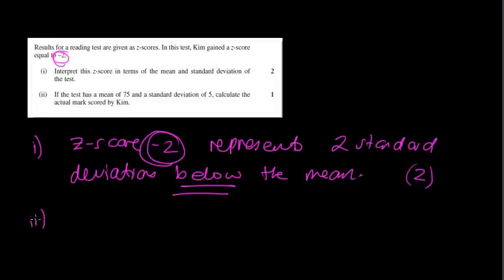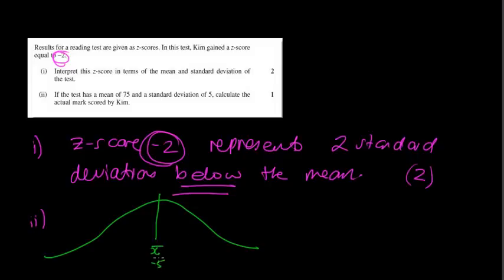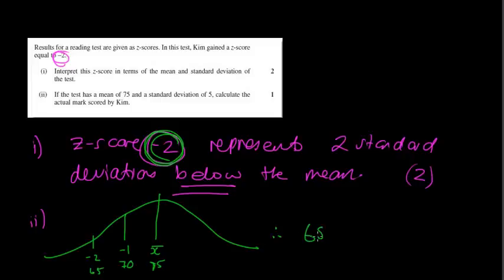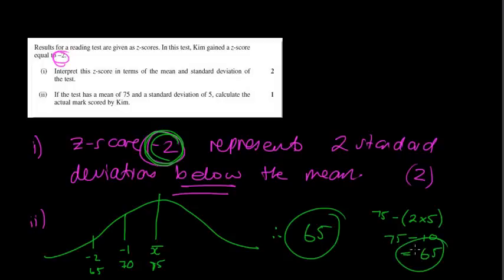The second part says: if the test had a mean of 75 and a standard deviation of 5, calculate the actual mark by Kim. So I'm going to draw my little normal curve. We have a mean of 75 and a standard deviation of 5. We're looking at a Z score of negative 2, so I only really need the two values left of the mean. That means one SD below is 70, and two SDs below is 65. Therefore, her real mark was 65. Or mathematically: 75 subtract 2 lots of the standard deviation — 75 take away 10 — equals 65.